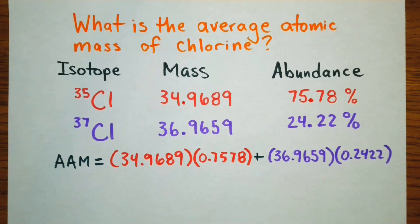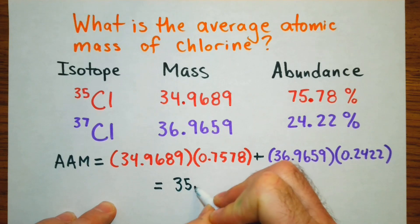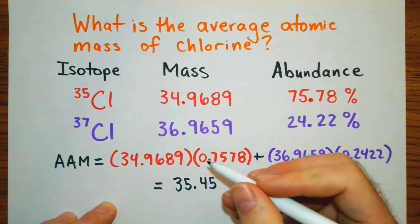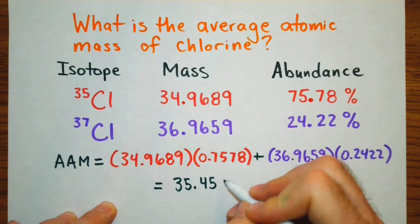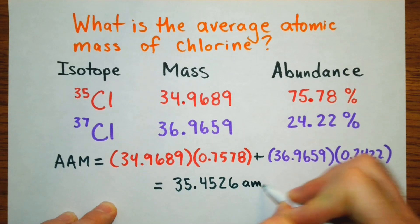Now once you put that into a calculator you will have a final value of 35.4526 atomic mass units.